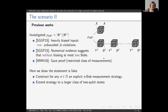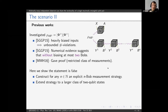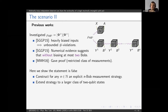What we show here is that the general statement is actually false if we allow the Bobs to use general qubit measurements — removing this restriction on the class of measurements. We recover that there is no bound on the number of Bobs that can violate: given any natural number n, we can provide an explicit measurement strategy such that the first n Bobs in the sequence can violate. Moreover, we also extend this strategy to a larger class of two-qubit states, which includes all entangled pure two-qubit states.